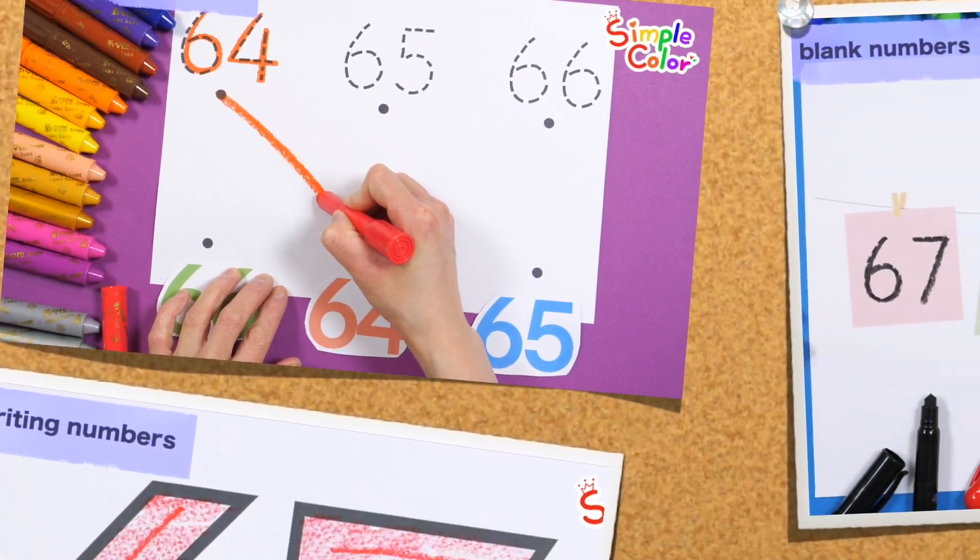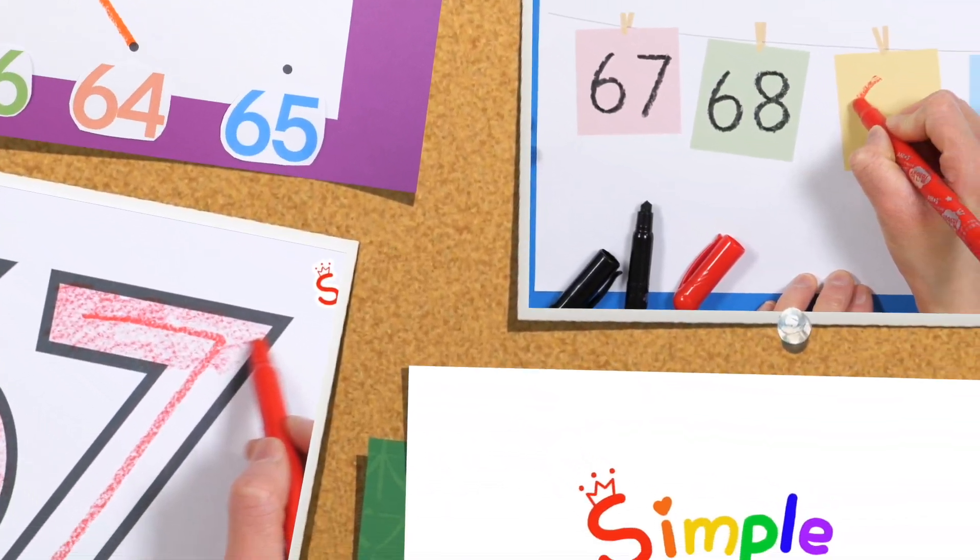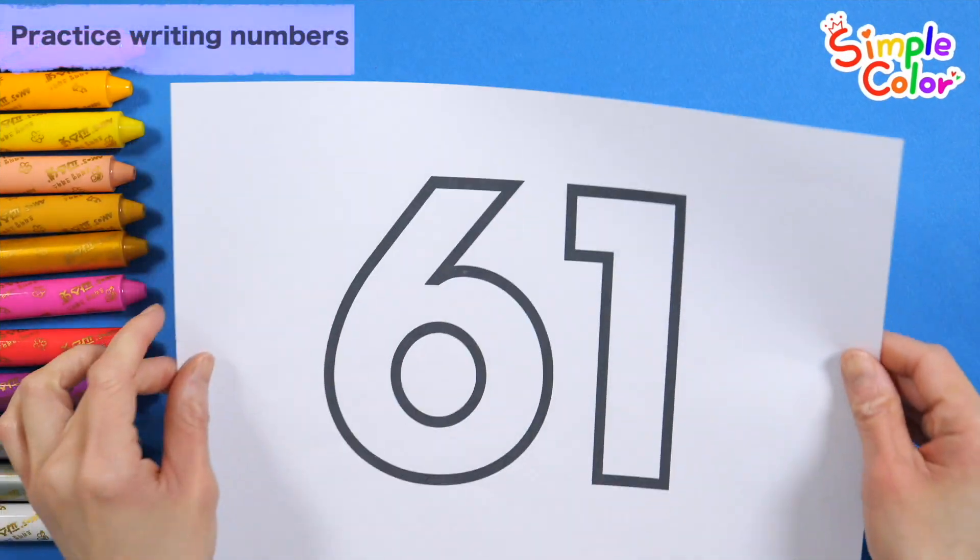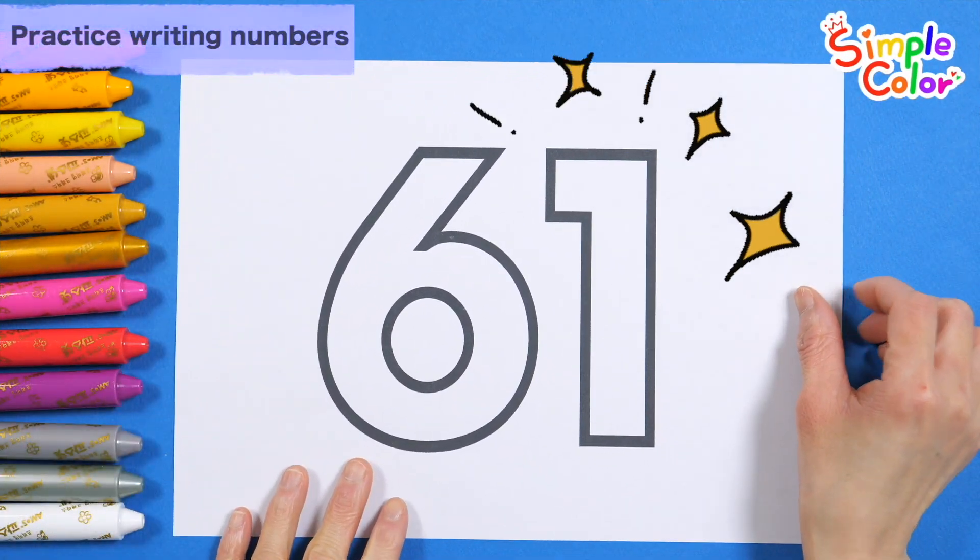E-I-E-I-Y-O, and on the farm... That's right! Let's write down the numbers following the thick number 61.